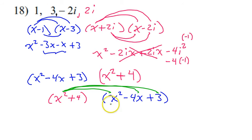x squared times x squared is going to give me x to the fourth power. x squared times negative 4x is negative 4x to the third power. And x squared times 3 is going to be 3x squared.